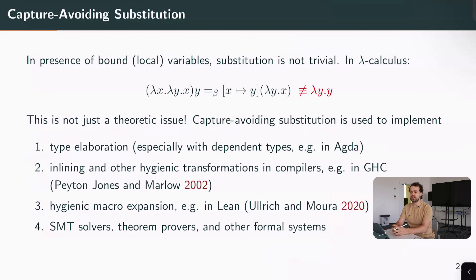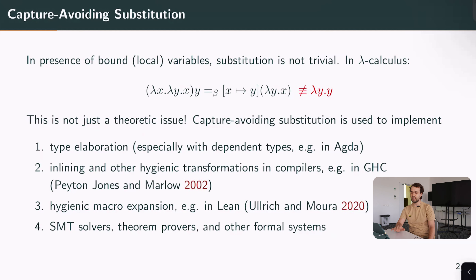This is of course present and studied a lot in lambda calculus, but this is not just a theoretical issue. Capture-avoiding substitution is very important and is used to implement many things related to programming languages and formal systems, such as type elaboration, type checking with dependent types, inlining and other hygienic transformations in compilers — for example GHC uses that a lot — as well as hygienic macro expansion in Lean or in Lisps, and in SMT solvers and theorem provers.